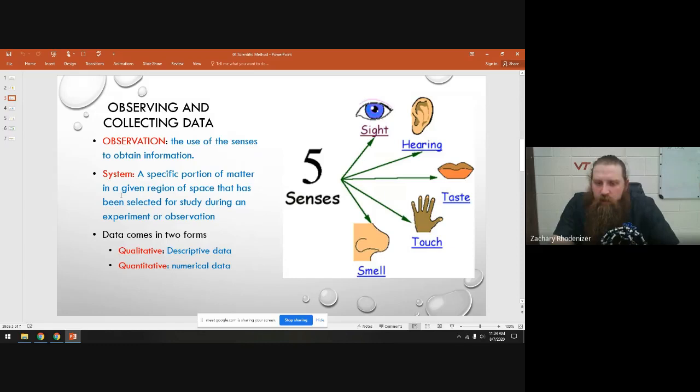When you make observations in chem, something that we're going to talk a lot about is just your five senses. Anytime you're using one of those five senses, we call it an observation.